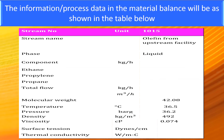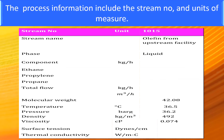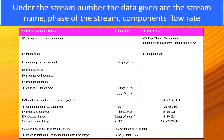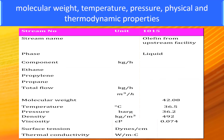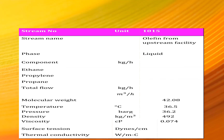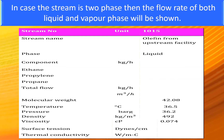The information or process data in the material balance will be as shown in the table below. The process information includes the stream number and the unit of measure. Under the stream number, the data given are the stream name, phase of the stream, component flow rates, molecular weight, temperature, pressure, and physical and thermodynamic properties including density, viscosity, surface tension, and thermal conductivity. In case the stream is two-phase, then the flow rate of both liquid and vapor phase will be shown.